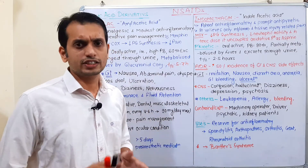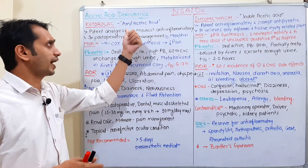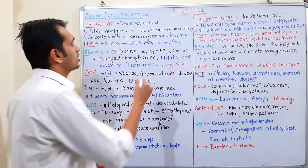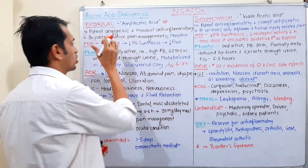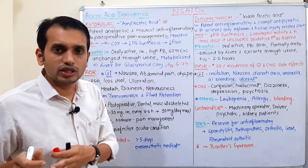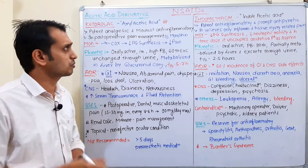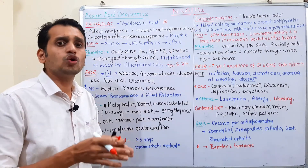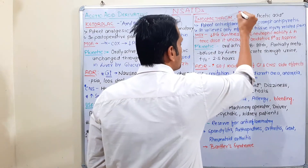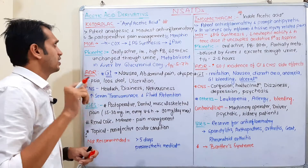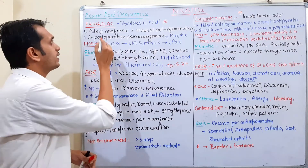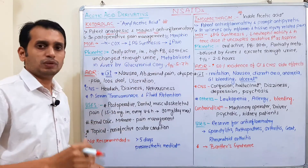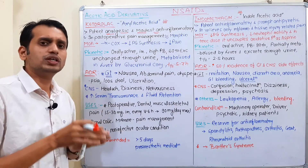The first drug is ketorolac, which belongs to the aryl acetic acid derivative class. Indomethacin belongs to the indole acetic acid derivative class — both are acetic acid derivatives but differ in their ring structure. These drugs are potent analgesics but only moderate anti-inflammatory agents, meaning their analgesic properties are good but anti-inflammatory properties are modest.